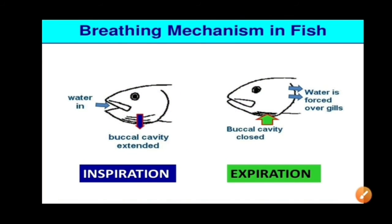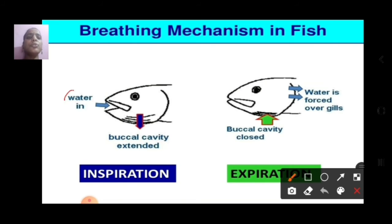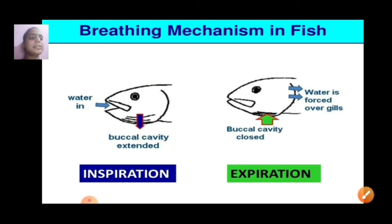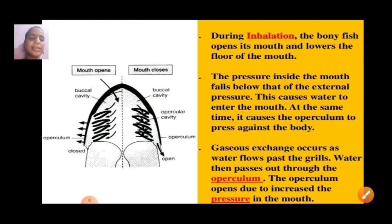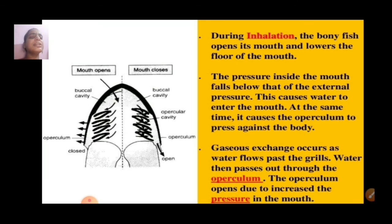This is the breathing mechanism — inhalation and exhalation. Water goes inside through the mouth and exchange of gases takes place. The buccal cavity is extended during inspiration, whereas during expiration the buccal cavity is closed and water is forced over the gills. During inhalation, the bony fish opens its mouth and lowers the floor of the mouth. The pressure inside the mouth falls below external pressure, causing water to enter the mouth. This causes the operculum to press against the body and gaseous exchange occurs as water flows past the gills. Water then passes out through the operculum, which opens due to increased pressure in the mouth.